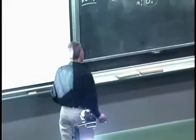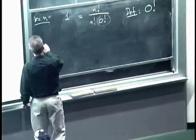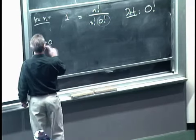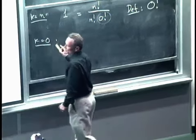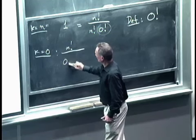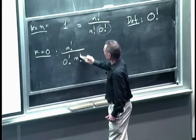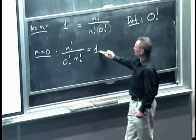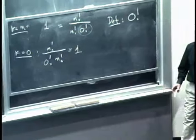So let's check that this is also correct at the other extreme case. If we let k equal to 0, what does the formula give us? It gives us, again, n factorial divided by 0 factorial times n factorial. According to our convention, this, again, is equal to 1.